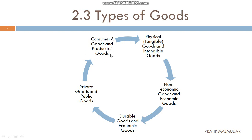Next are consumer goods and producer goods. When goods are directly used for the consumption purpose — when you purchase a product and directly consume it — it will be known as consumer goods. If you are using it for the purpose of making a new product, then that will be known as producer goods.